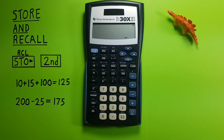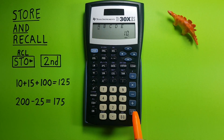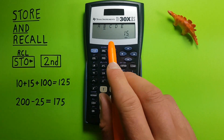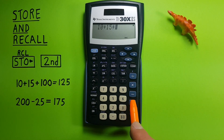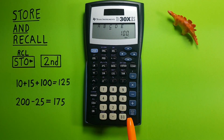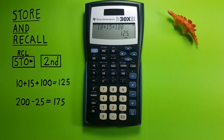Now if we want to use these numbers in a calculation — let's say A plus B plus C — without having to type them in, we use the second function recall, select A, hit enter. Next is plus, so we go plus, second function recall, B, enter. And we know 100 is stored as C, so plus, second function recall, C, enter. There's our equation. We press equals and we get 125, which is A plus B plus C.